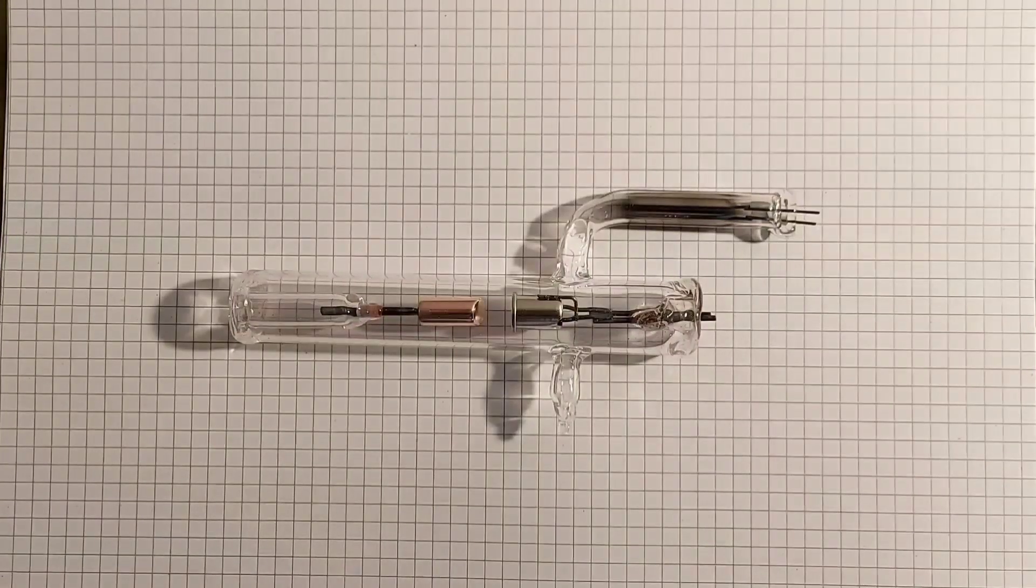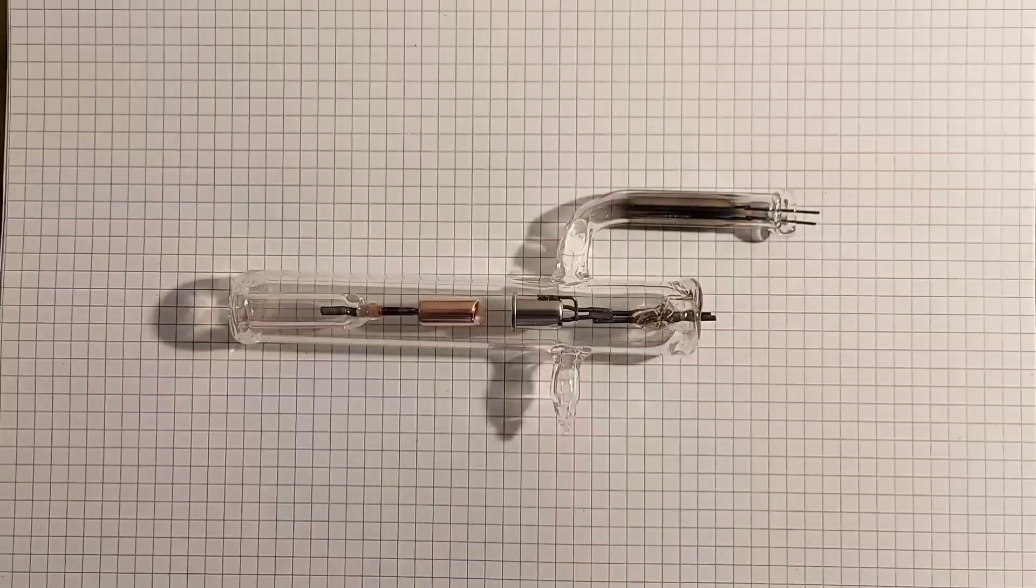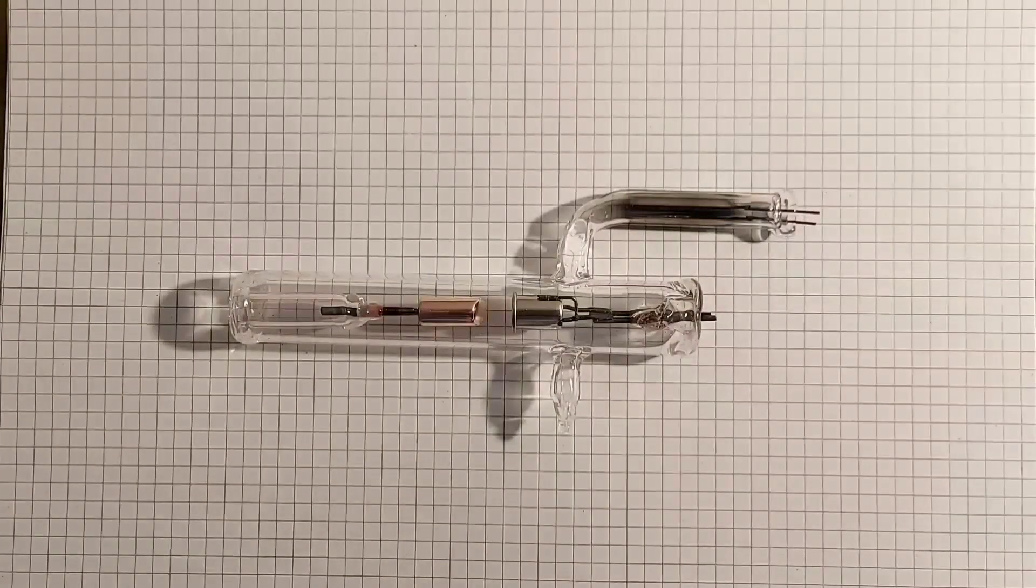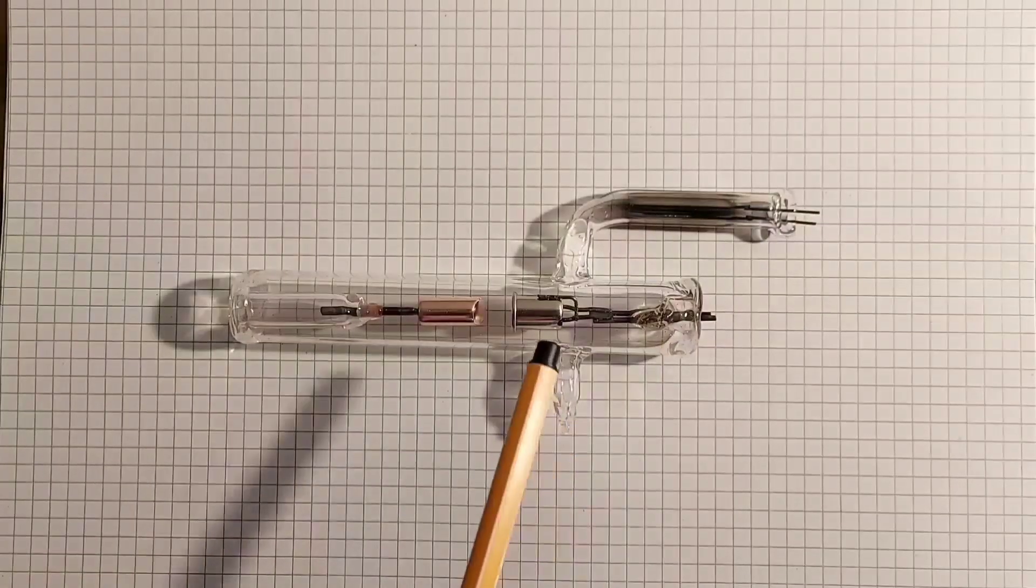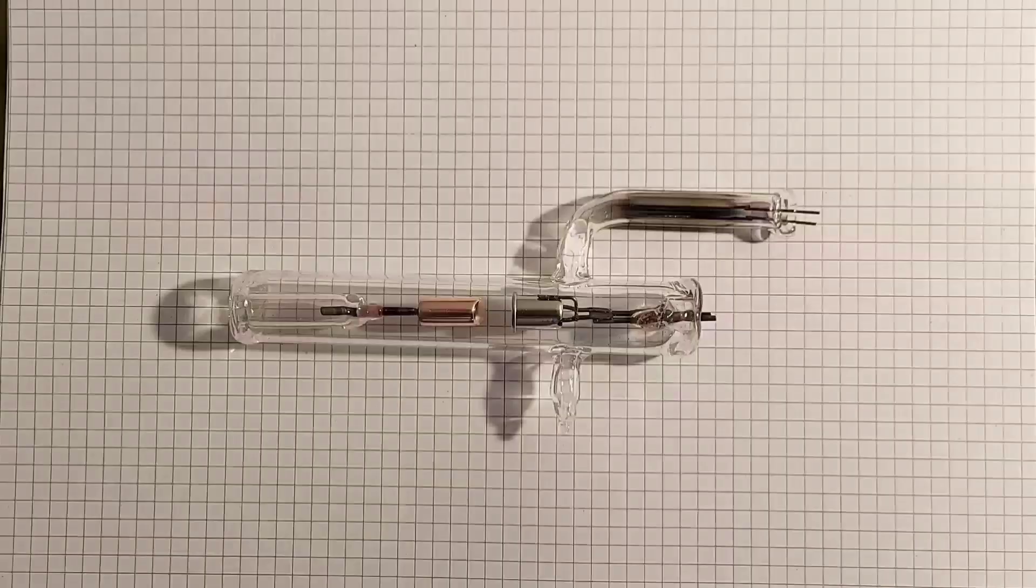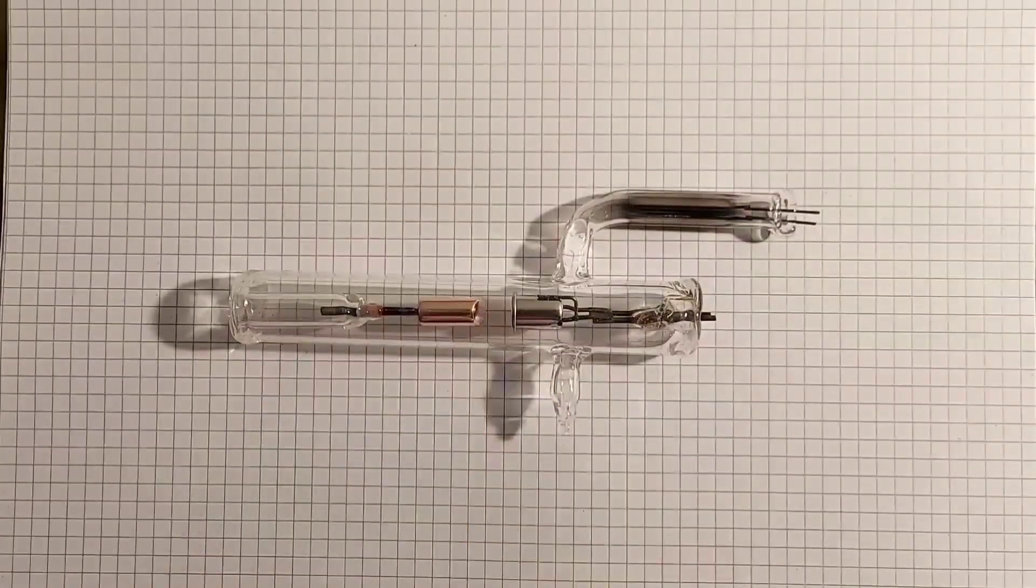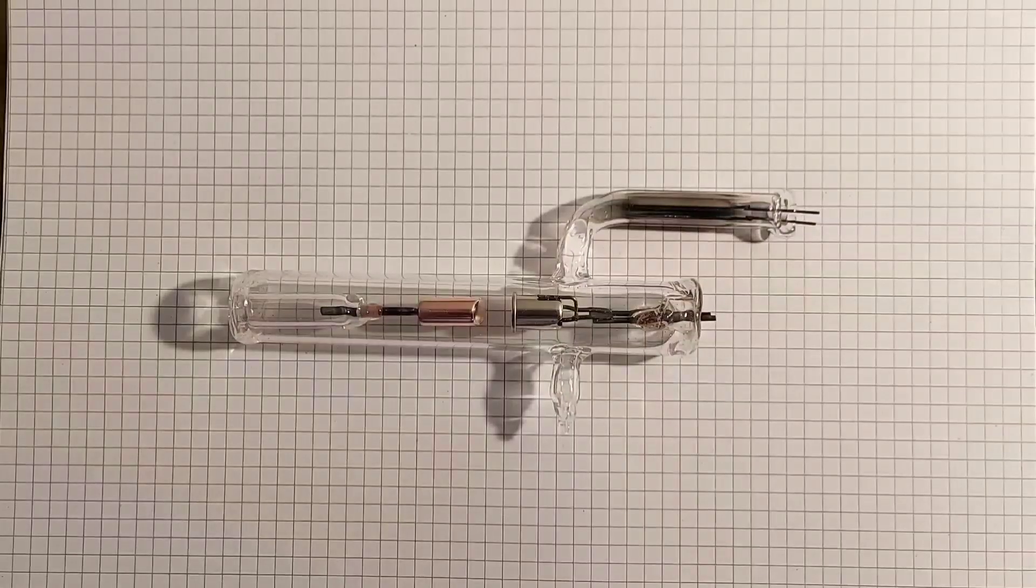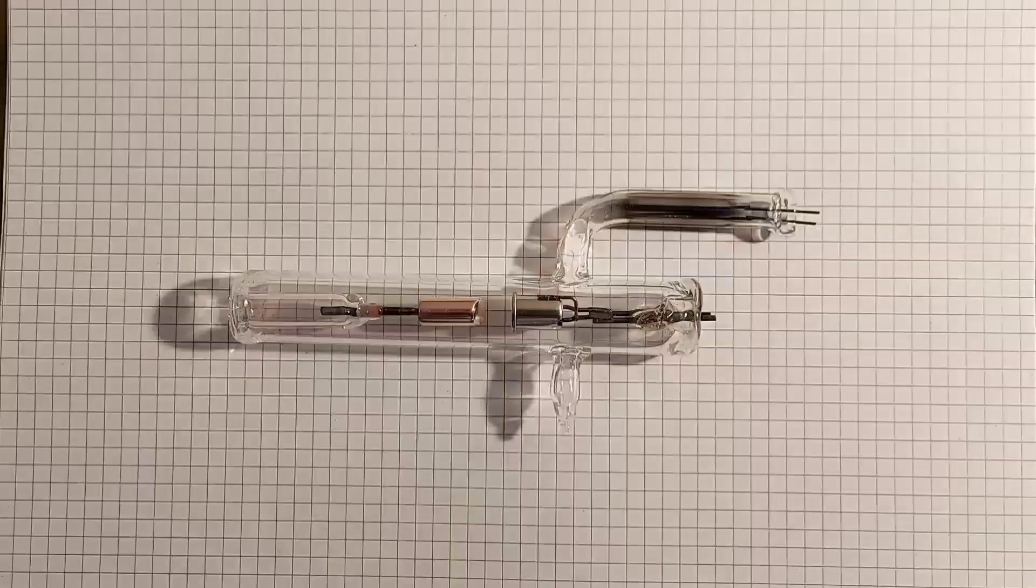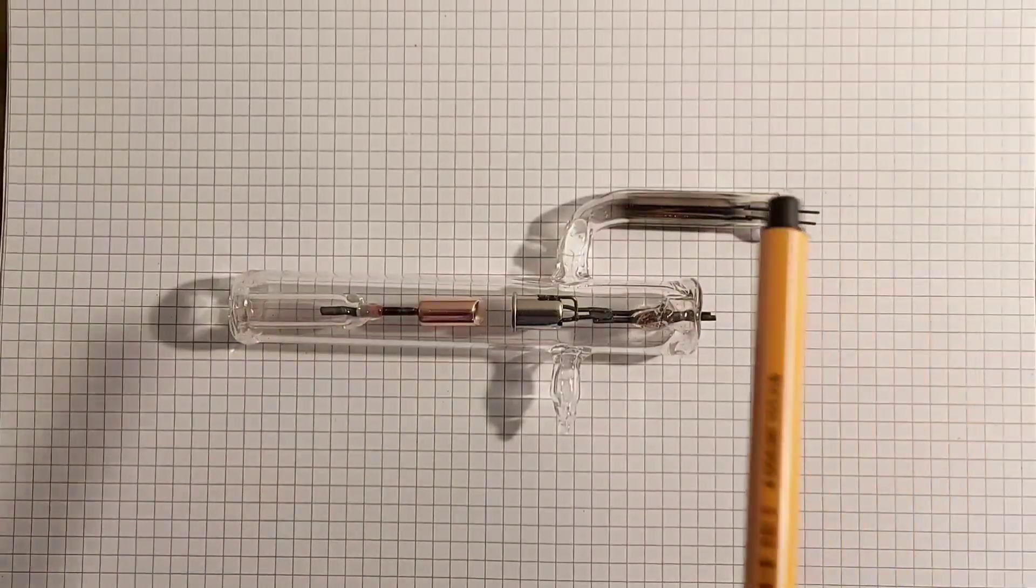So my tube is a hot cathode x-ray tube and it means it uses thermionic emission of a heated tungsten wire. You can also see a Wehnelt cylinder here. It's to help focusing the electron beam onto the target here. It's a copper target.